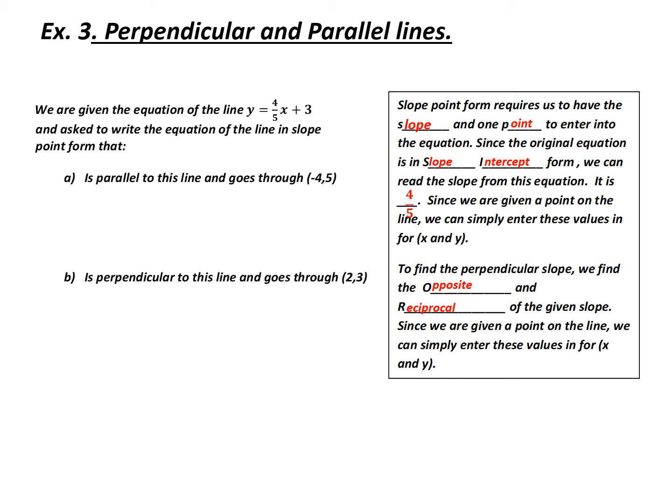Example 3, perpendicular and parallel lines. Here, we're given the equation of the line y = 4/5x + 3. And we're asked to write the equation of the line in slope point form. That is, A, parallel to it, going through the point (-4, 5), and B, perpendicular to it, and going through the point (2, 3). Well, let's start with A.